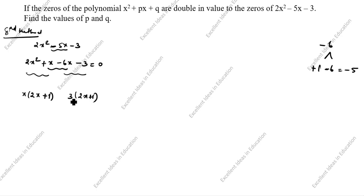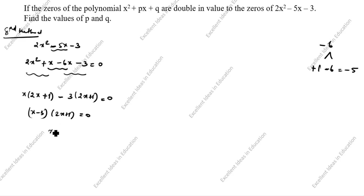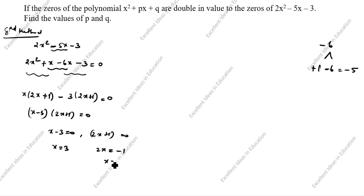So we get (2x plus 1)(x minus 3) equal to 0. Therefore x minus 3 equals 0, giving x equal to 3, and 2x plus 1 equals 0, giving 2x equals minus 1, so x equals minus 1 by 2.